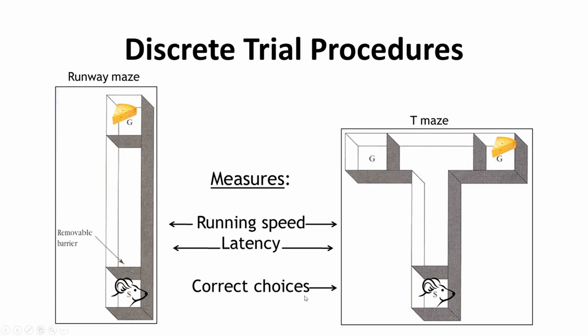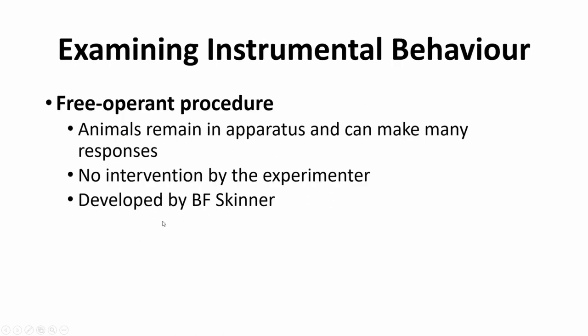Making that choice can be an operant behaviour itself. Choosing to go right to where they know they'll get food would be choosing a particular behaviour that gets them a good consequence — getting food. It absolutely fits what we're talking about with operant conditioning.